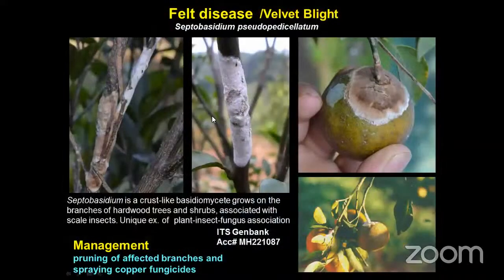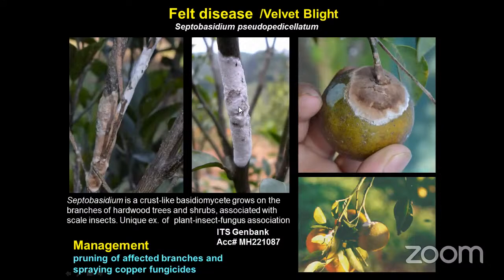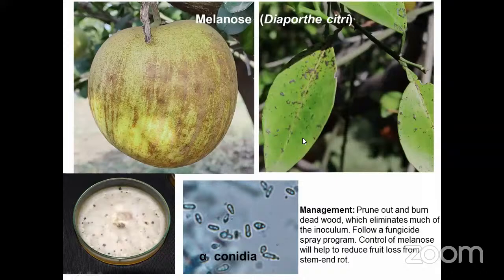Some foliar pathogens exist in high rainfall and high humidity regions like the northeastern region. Septobasidium pseudopedicellatum is a crust-like basidiomycetes that grows on branches — it is a plant-insect-fungus association; when the felt-like growth is removed, scale insects can be found inside. Mechanical removal is the key, along with pruning of affected branches and spraying copper-based fungicides like COC or Bordeaux mixture. Another disease is Melanose, caused by Diaporthe citri, which is a major disease of grapefruit and pomelo. Rain splash carries fungal spores down the tree, causing tear-stain-like symptoms.